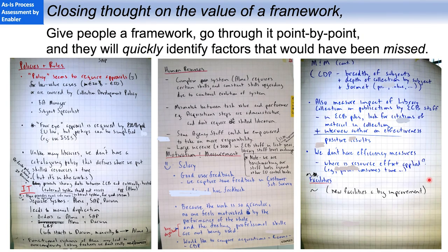I'd like to close by reflecting on the value of a framework like the six enablers. If you give people a framework and go through it point by point — one enabler at a time — people will always identify factors they would have missed otherwise. What I'd like you to do after this webisode is apply this framework at your enterprise on your own, and just think about things you've seen that might fit into one of these six enablers.